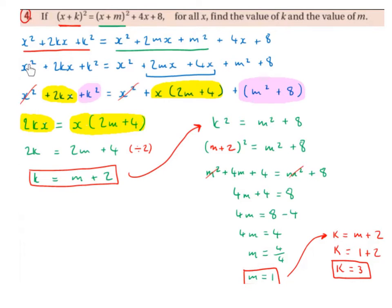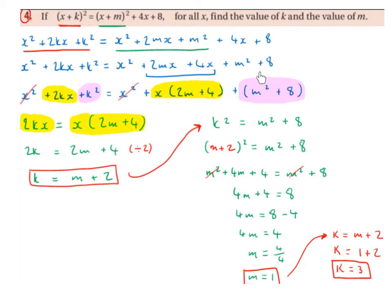We bring down the x squared, the plus 2kx and the plus k squared on the left, and the x squared on the right. Then we factorize the two x terms on the right by taking out the x, which is the highest common factor. x into 2mx leaves 2m, and x into 4x leaves 4, so we get x times (2m plus 4). Then we group together the m squared plus 8, since there is no x or x squared term attached to either of these.